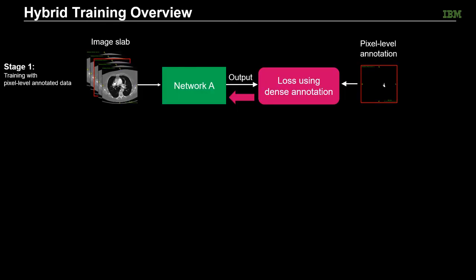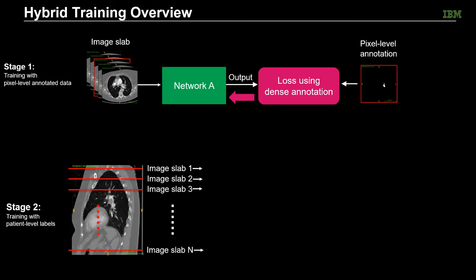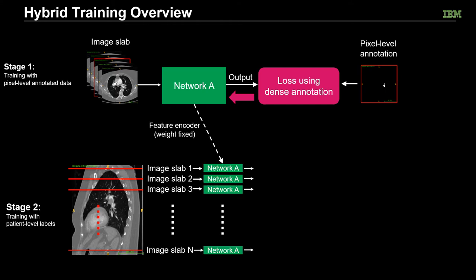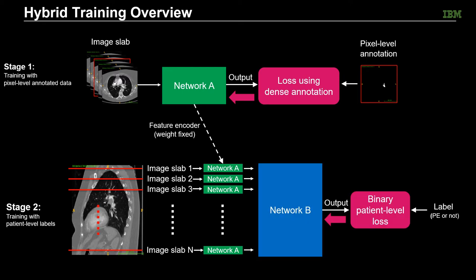Our hybrid training has two stages. In stage one, we use image slabs and the corresponding pixel-level annotations to train network A. Then in stage two, we fix the weights of network A and use it as a feature encoder. All the image slabs in the volumetric CT images are processed by network A and then sent to network B to produce patient-level PE prediction. Network B is then trained by comparing the prediction with the patient-level PE labels.